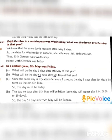Another type of question: if 4th October in a certain year was Wednesday, what was the day on 27th October in that year? We know that the same day is repeated after every 7 days. So, the dates for Wednesday in October after the 4th were 11th, 18th, and 25th. Thus, 25th October was Wednesday, and hence 27th October was Friday.